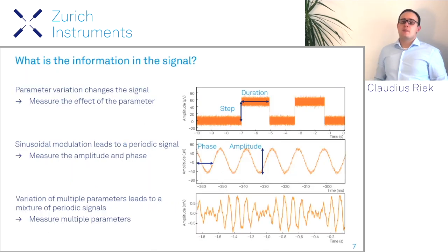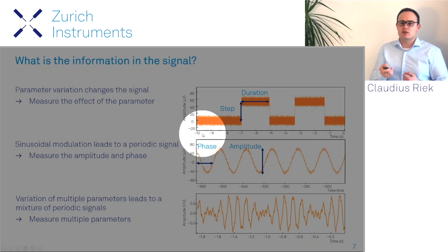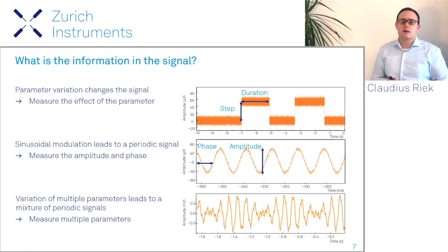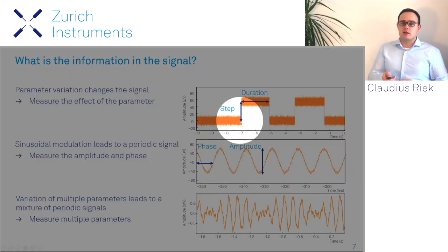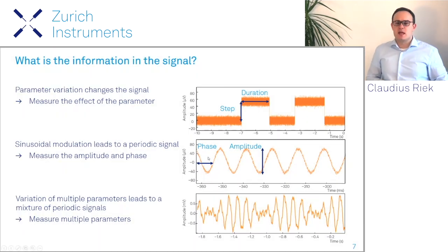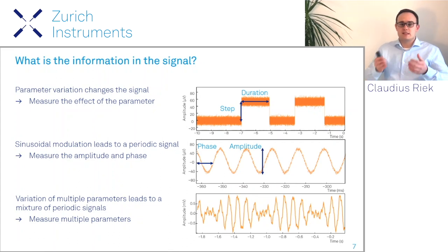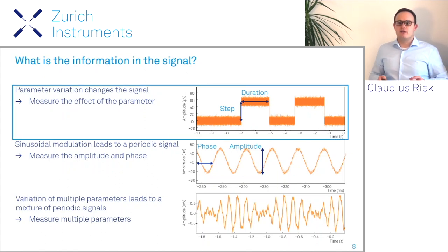Let's jump back to the topic and look at where the information in the signal is actually contained. In the first example, we have some change in a parameter — a jump — where the amplitude over a certain duration is the measure of the effect. If we add a sinusoidal modulation, for example by using a mechanical light chopper wheel in the laser beam, this leads to a periodic signal where we can measure the amplitude and the phase. If we have multiple such modulations in the same signal, it results in a mixture of periodic signals, and we can measure multiple parameters — always the phase and amplitudes of the different modulation signals.